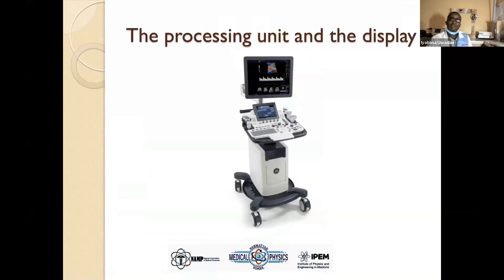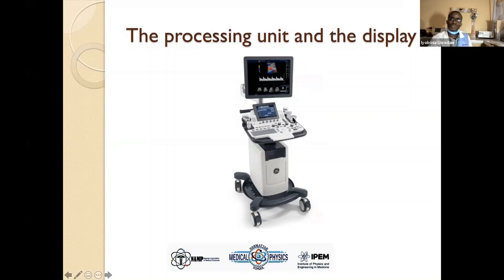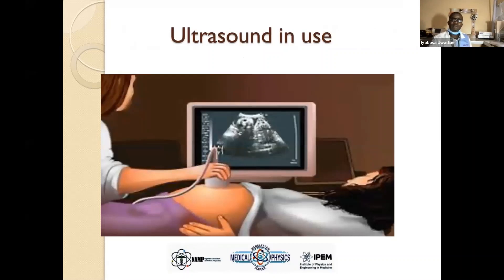We have the processing unit and the display, with so many knobs that do many functions. For example, the time gain compensation knob. Many other knobs can be tuned to make a particular image at a particular depth have a particular echogenicity.